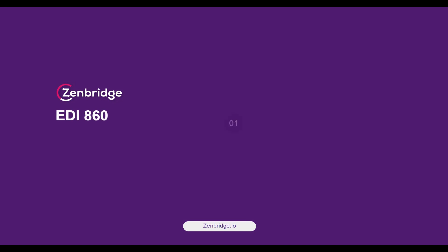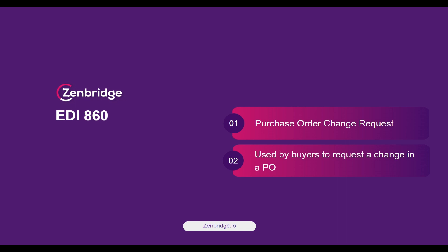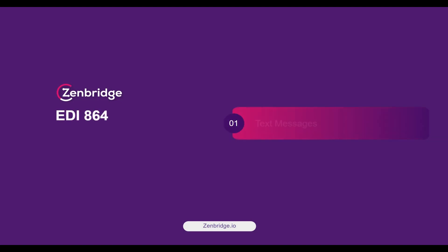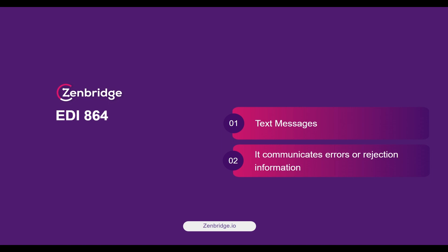EDI 860 is a purchase order change request, which is used by buyers to request a change to the purchase order. EDI 864 is used by trading partners to send text messages to each other to communicate any errors or rejections in their transactions.